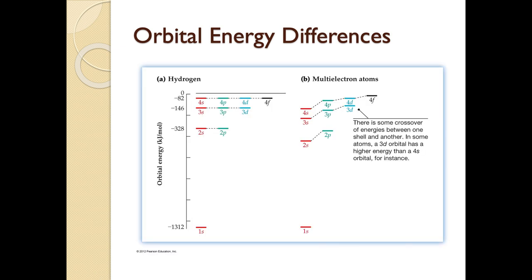The general pattern is that bigger n values give higher energy, and bigger l values also give higher energy. For hydrogen on the left side of our energy diagram, here's the 1s orbital at the bottom — lowest energy. The 2s and 2p orbitals on hydrogen are about the same energy, and similarly 3s, 3p, and 3d are all the same energy. But for anything other than hydrogen, that's not the case — 2p is higher in energy than 2s, 3p is higher than 3s, and 3d is higher than 3p.